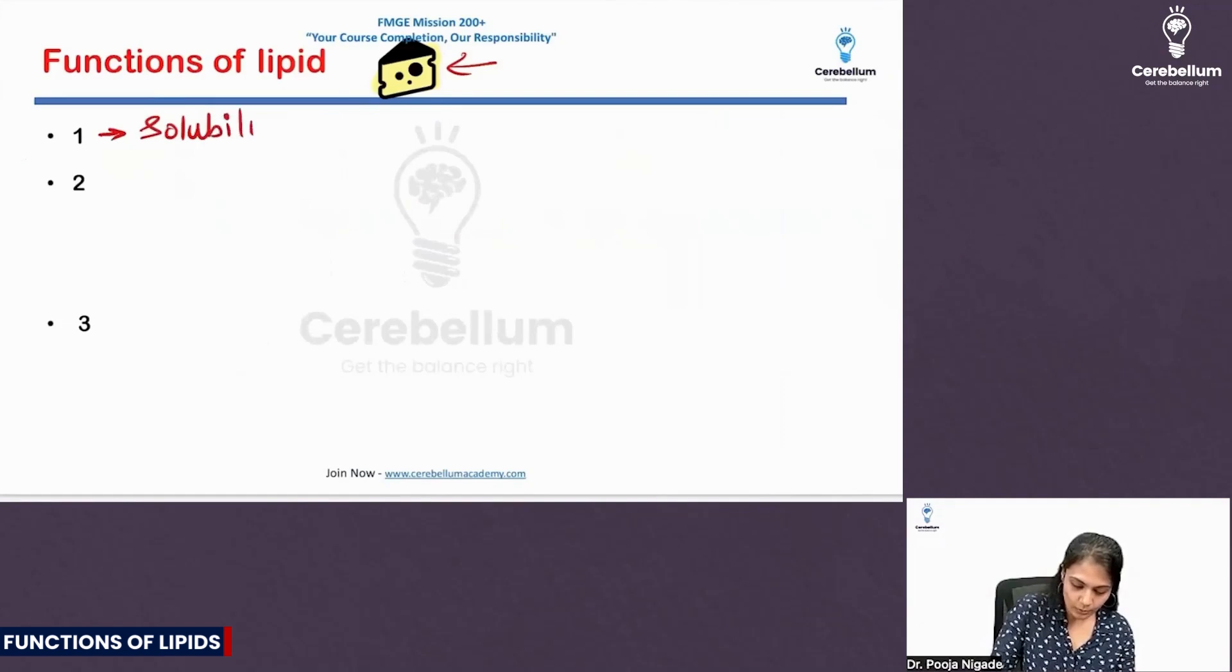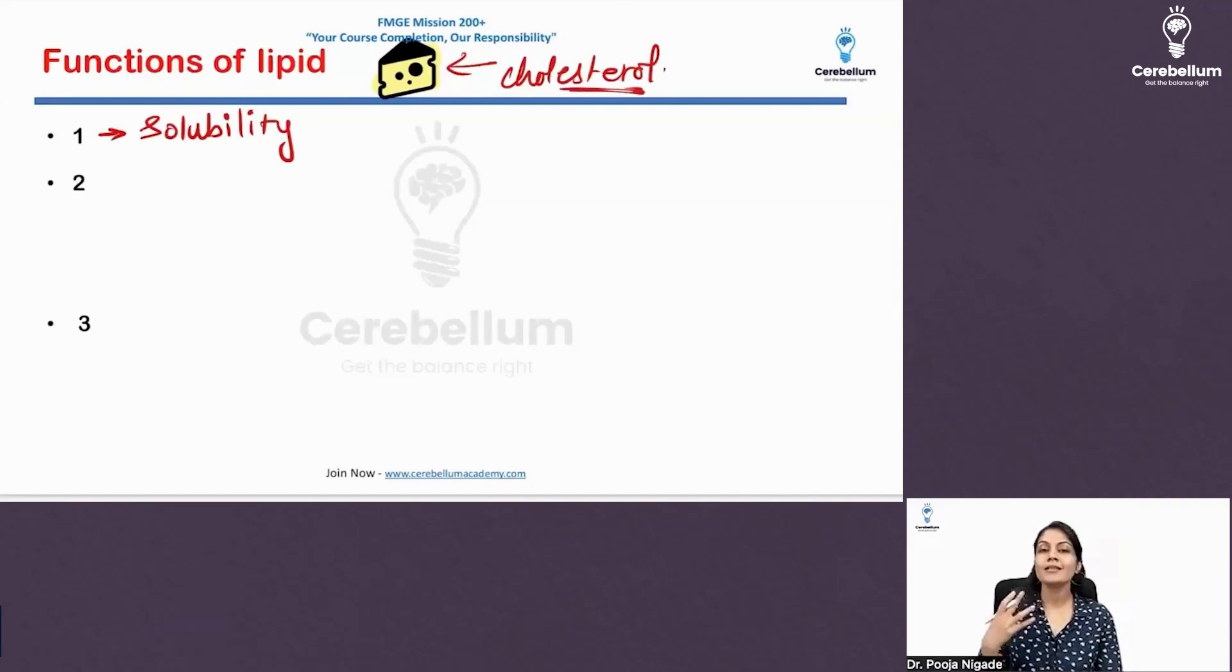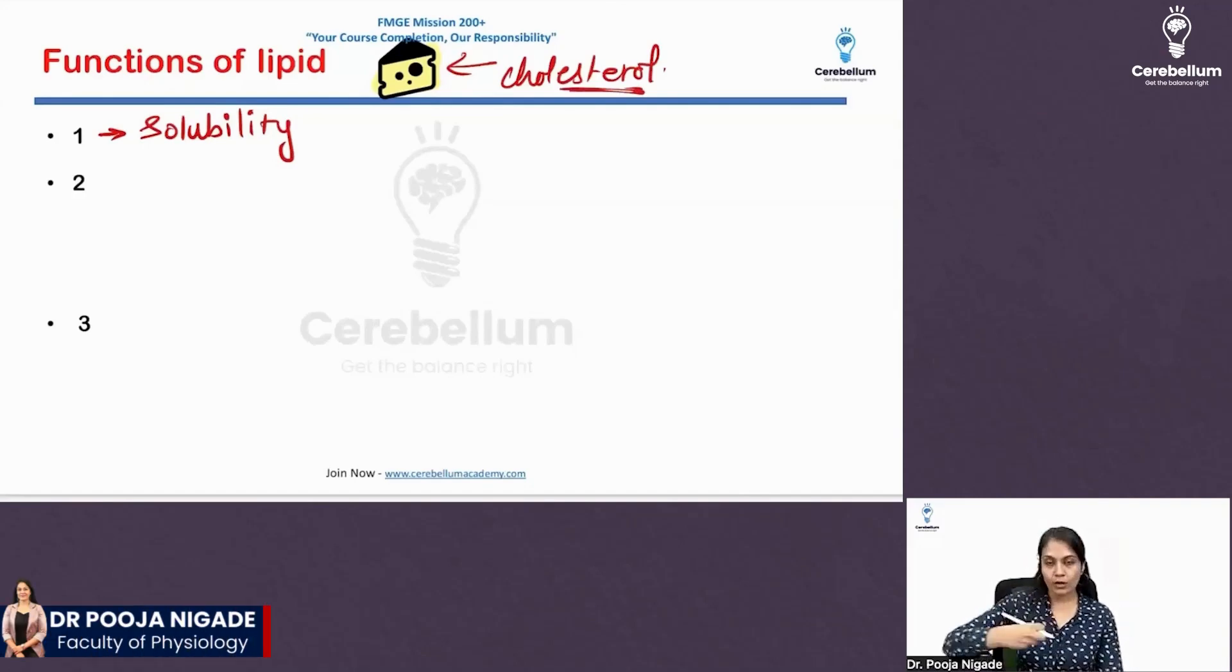We just now saw the solubility. Plus, this cheese is showing what? It is showing the cholesterol actually. Cholesterol. So, cholesterol kya karthai? It maintains the fluidity of the membrane. If something got exocytosed from the cell, that means we make a vacuole, we make a bag-like thing and we make something to exocytose.